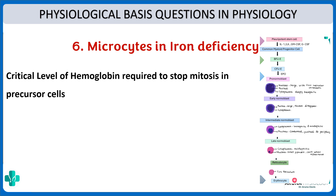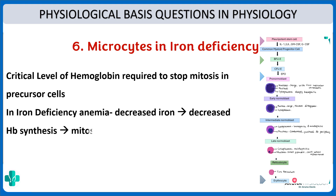Mitosis is stopped only when a critical level of hemoglobin is reached; otherwise it continues. In iron deficiency anemia, decreased iron leads to decreased hemoglobin synthesis, so the mitosis continues and the cell becomes smaller. That is why microcytes are present in iron deficiency.